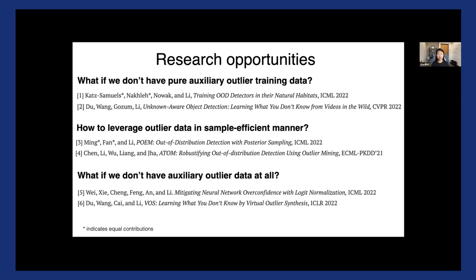And lastly, what if we don't have any auxiliary ally data at all, or when, you know, it's not feasible or possible to collect any, what can we do? Is there something still, you know, smart we can achieve just by working with in-distribution data itself?